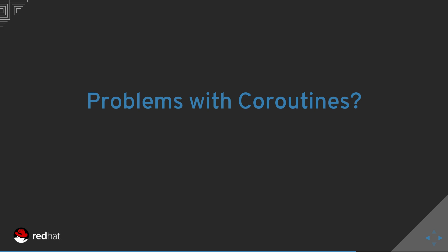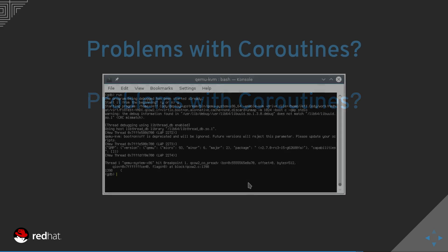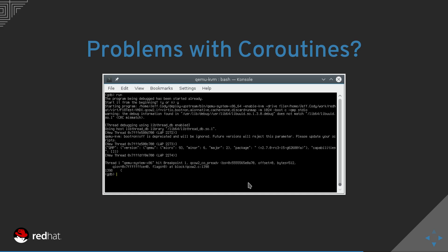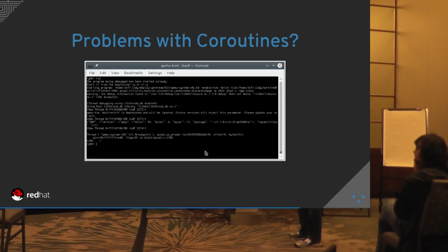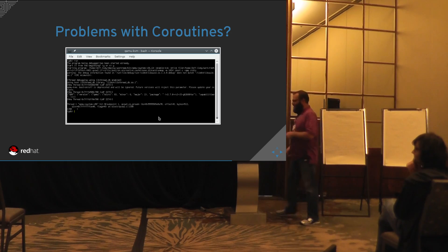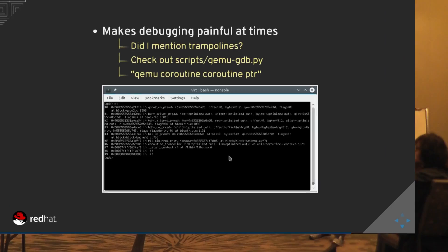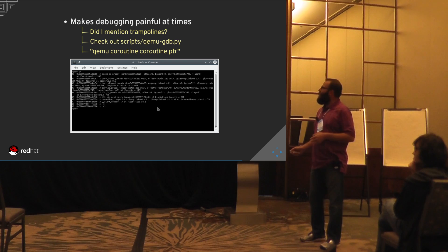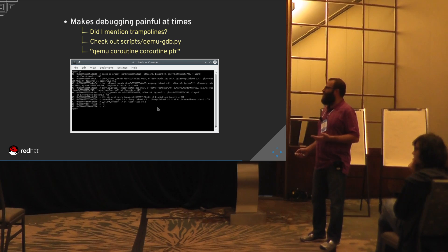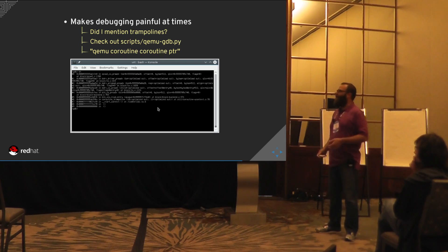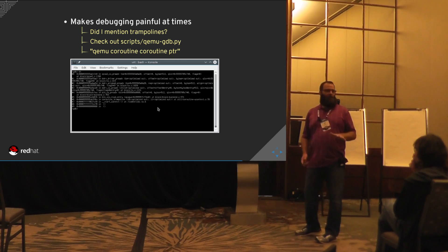Now let's talk about some problems with coroutines. The trampoline can make debugging painful at times. When debugging with GDB, you might stop at a breakpoint, do a backtrace, go down, and all you see is the trampoline — you don't know the context from where you came. It can be a little frustrating. However, there are GDB helper functions in QEMU's scripts directory to do some probing to figure that out.